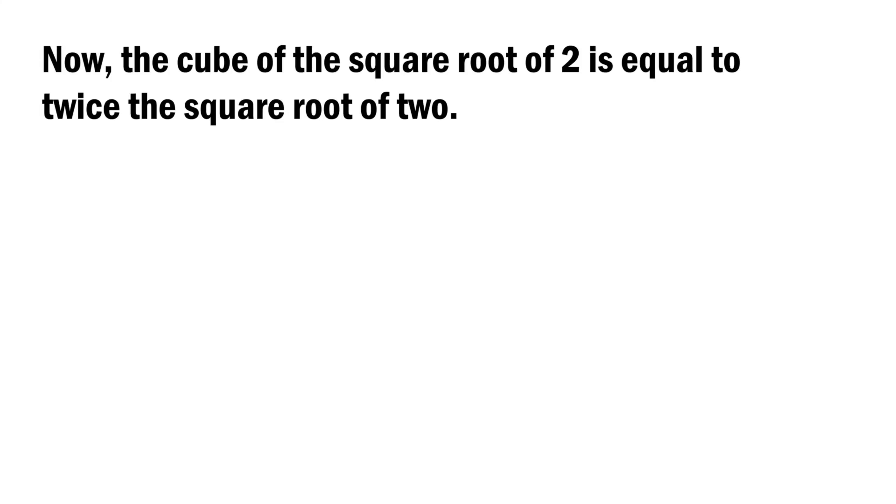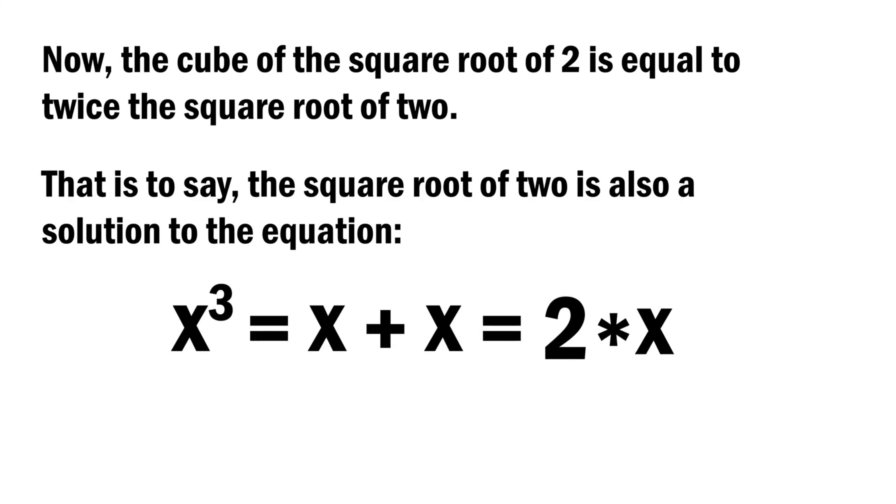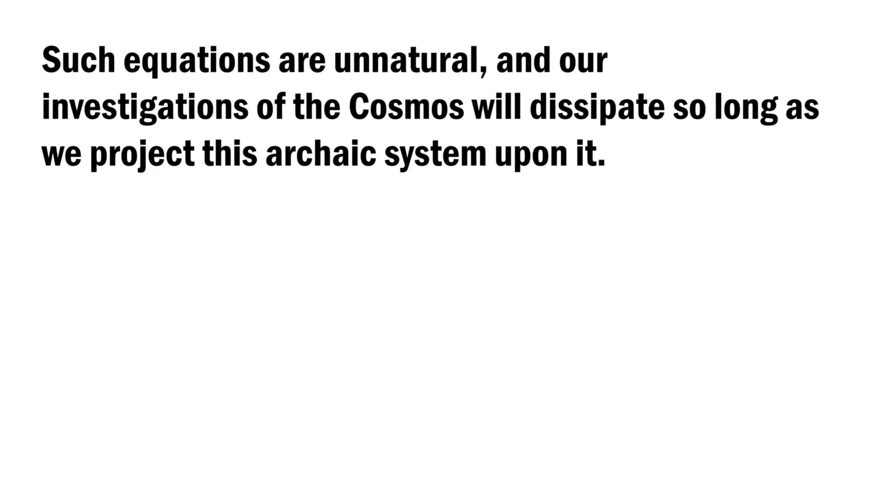Now the cube of the square root of 2 is equal to twice the square root of 2. That is to say, the square root of 2 is also a solution to the equation x cubed equals x plus x, which is equal to 2 times x. Such equations are unnatural, and our investigations of the cosmos will dissipate so long as we project this archaic system upon it.